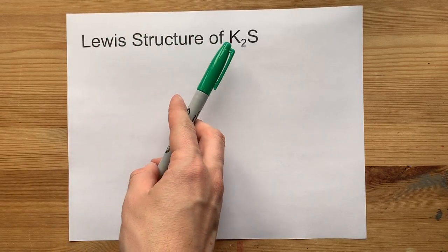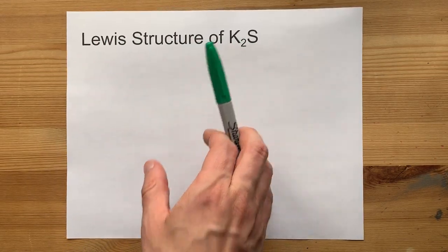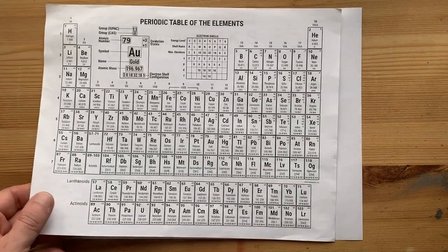Together, let's draw the Lewis structure for K2S, that's potassium sulfide.